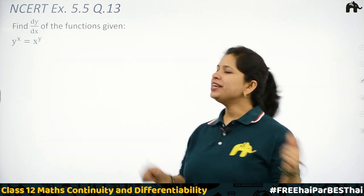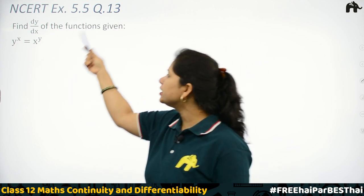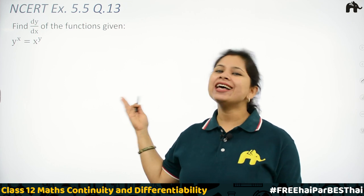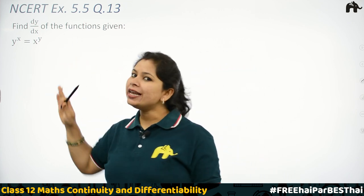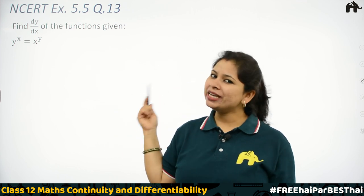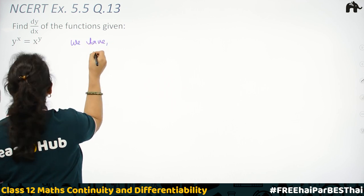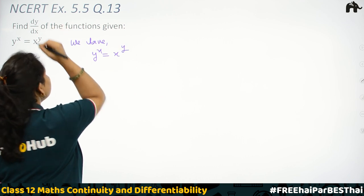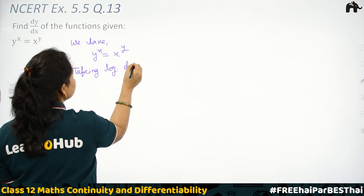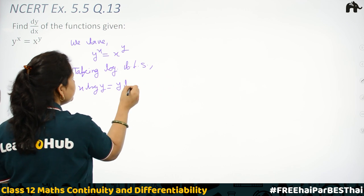Question 13 is also easier than the last one. Here we also have to find dy/dx, and there is no plus sign. So without assuming u and v, we can directly differentiate. Here we have y^x = x^y, and we need to find dy/dx. Taking log both sides: x·log y = y·log x.